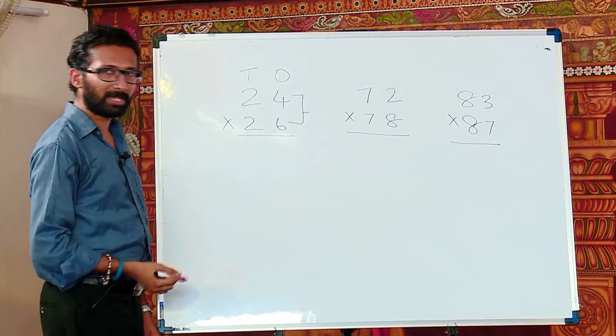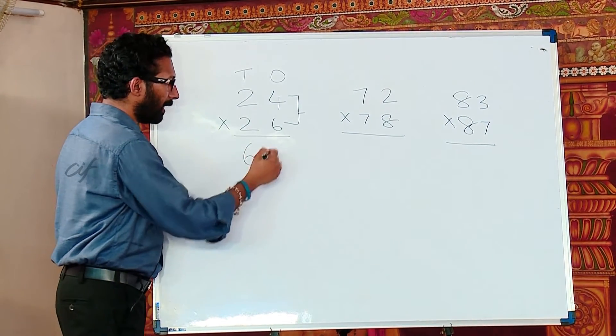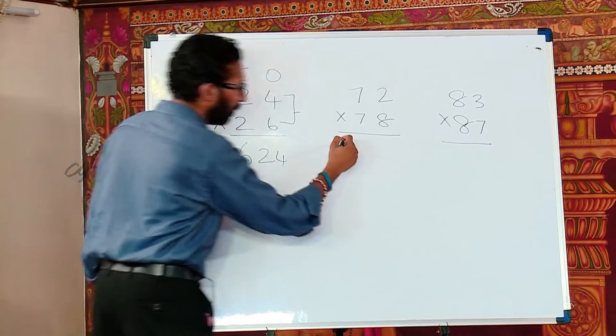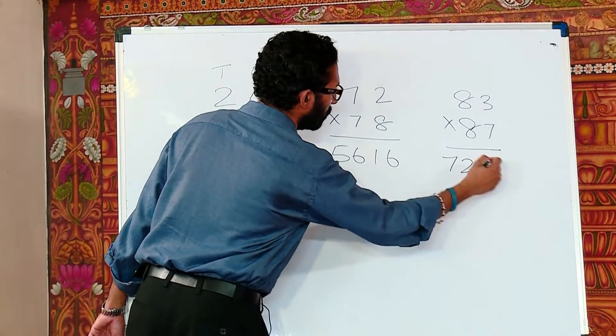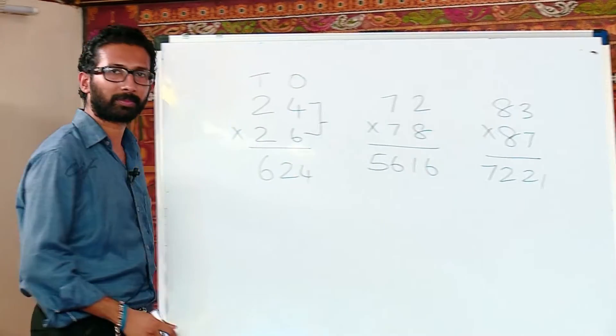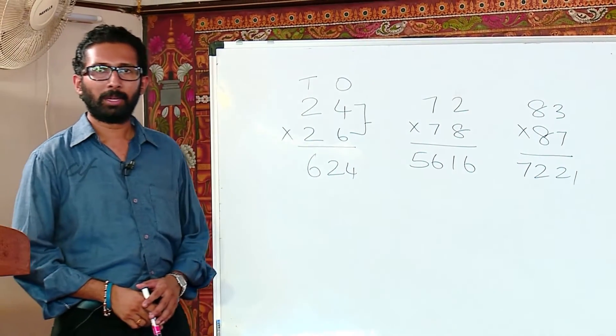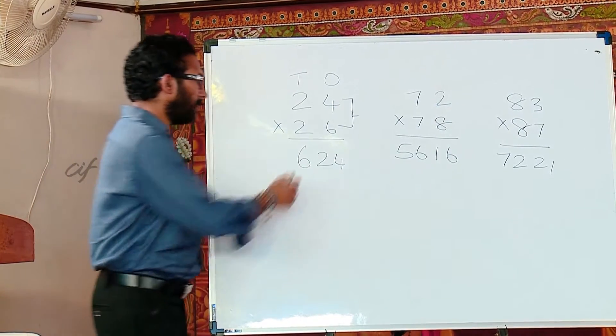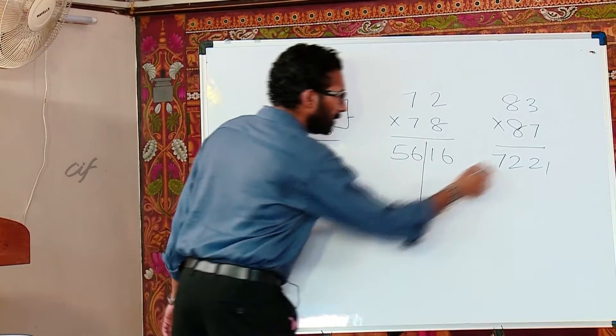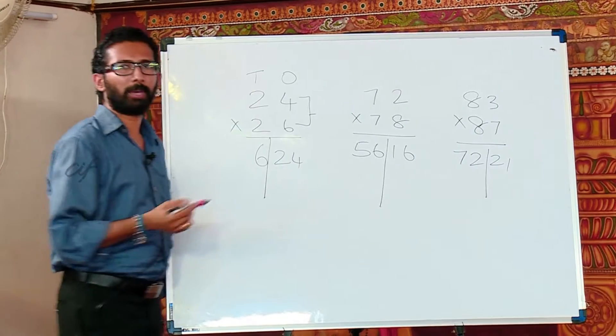So when we have questions like this, then we can just write the answer as 624, this is 5616 and this is 7221. Now, these are not the answers that I got using a calculator and I am very sure that you can get the answer just by mere observation.